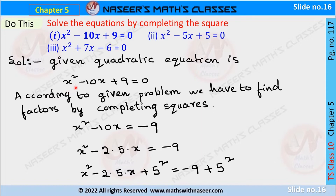The first problem is: x² - 10x + 9 = 0. To solve this quadratic equation by completing the square method, we transpose +9 from LHS to RHS. Then we can write it as x² - 10x = -9.